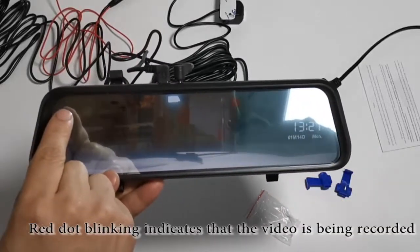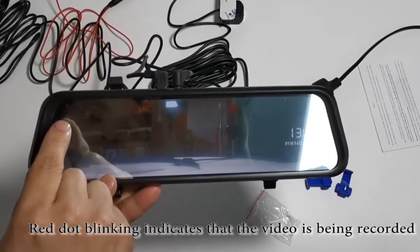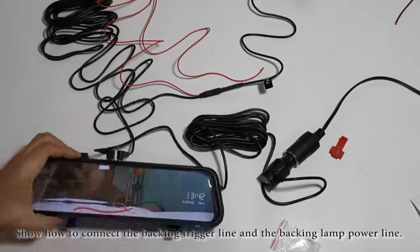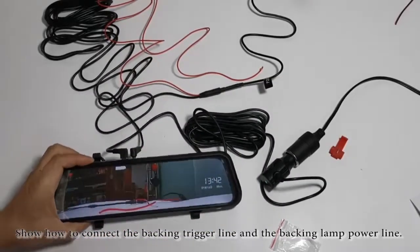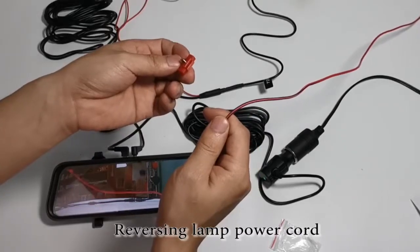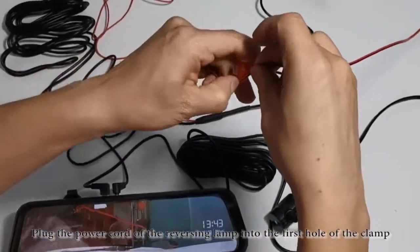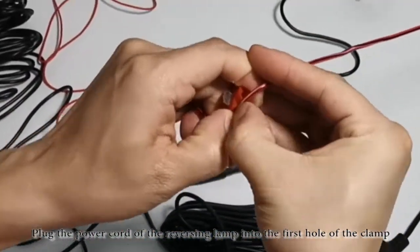Red dot blinking indicates that the video is being recorded. Show how to connect the backing trigger line and the backing lamp power line. Reversing lamp power cord. Plug the power cord of the reversing lamp into the first hole of the clamp.